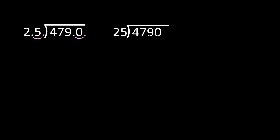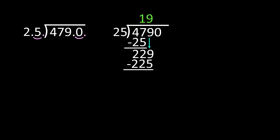47 divided by 25 is 1. 1 times 25 is 25. Now I'm going to subtract — 7 minus 5 is 2, 4 minus 2 is 2, so I get 22. The next step in our division process is to bring down the 9. So as you can see, once we take care of our decimals, we are dividing like normal. Now I have 229 divided by 25. 229 divided by 25 is 9. 9 times 25 is 225, and I am subtracting. 9 minus 5 is 4, and then I need to bring down that 0.